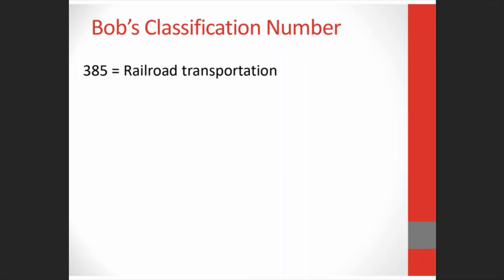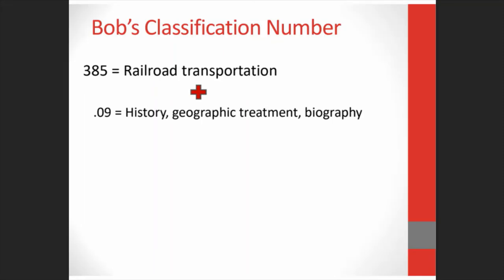But we have the geographic aspect for the book, so we need to take it just a bit further. What's coming next is the decimal point followed by another number, which is how we get the decimal part of the Dewey Decimal System. The rules tell us that we can use a subdivision for geographic treatment, decimal .09, which we add to our 385. So far, we have 385.09.